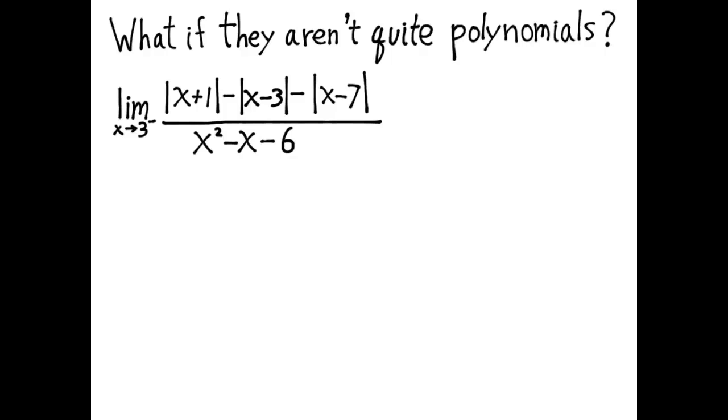Now, the denominator we don't have to worry about. To get rid of the zero factor in the denominator, I can factor out x minus 3. But to deal with the numerator, we have to somehow get rid of those absolute values. And it's not as difficult as you might think.